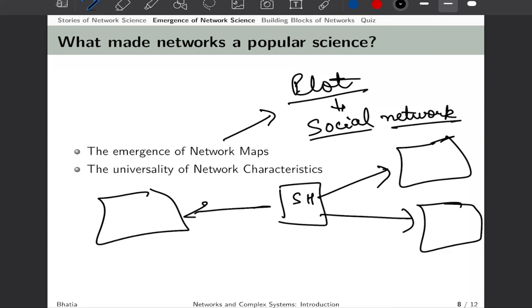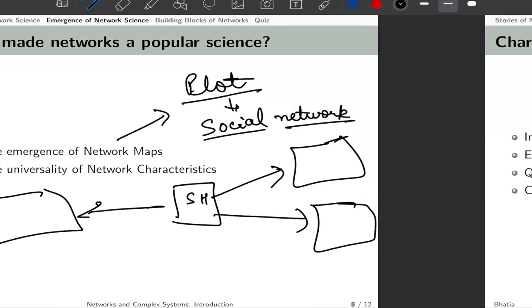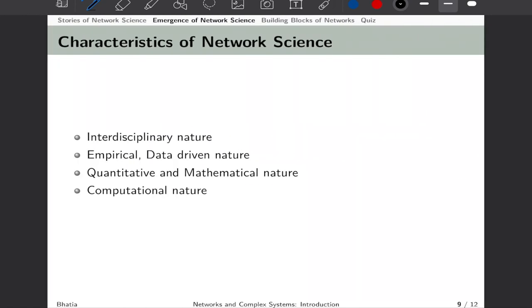We will understand the statistics of how these networks emerge. Many networks find a common theory that can explain their origin or genesis, resulting in universality. Another interesting thing is that network science is an interdisciplinary science. People from medical, biology, social networks, civil engineering, and infrastructure planning have been using network science to solve problems of different scale and importance.